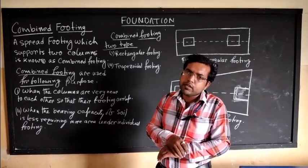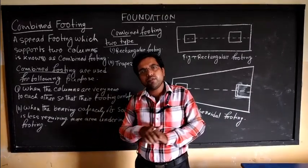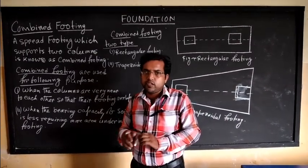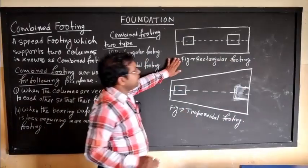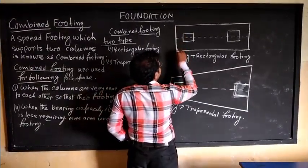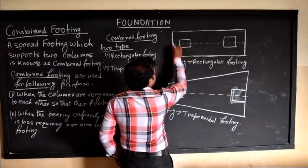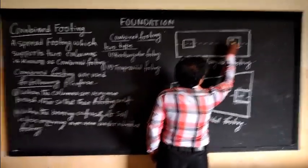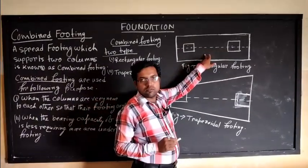Combined footing is the same as rectangular footing and trapezoidal footing. So, this is the same as rectangular footing. The rectangular footing is the same as rectangular footing.